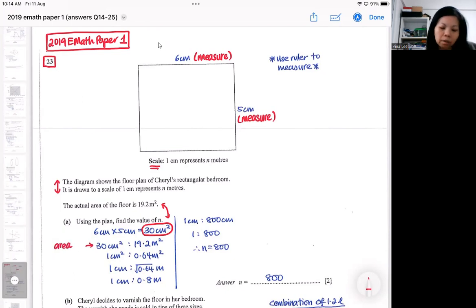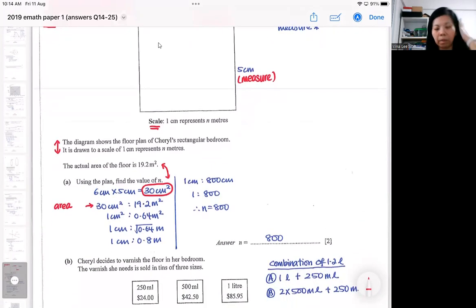From the area scale, I can reduce it to the length scale. But before I reduce it, it is always a good idea that you find out one centimeter square first. So you divide both sides by 30, so that you can find out one centimeter square. After you find out one centimeter square, then you can take the square root.